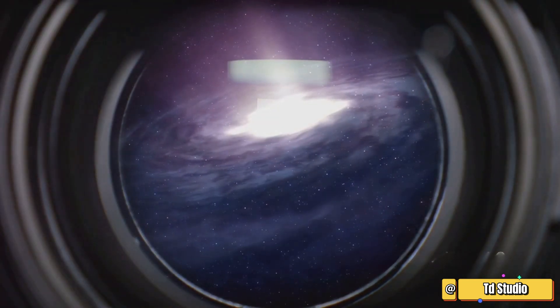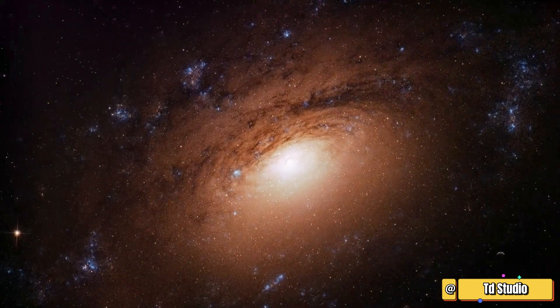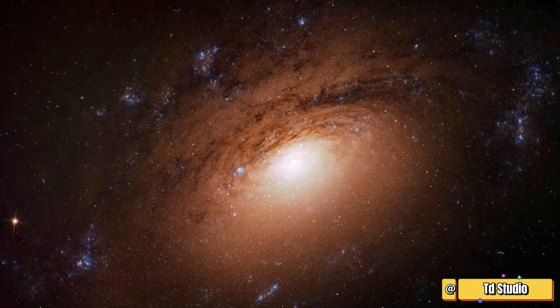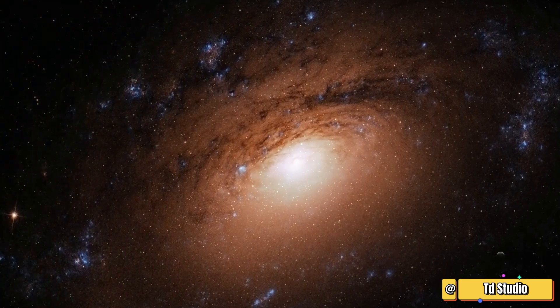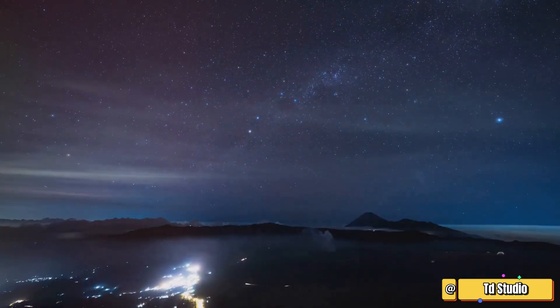Andromeda is about 2.5 million light years away. This means that the light we see from Andromeda today actually left the galaxy 2.5 million years ago. It's like looking back in time, seeing Andromeda as it was long before humans even existed. That's a very, very long distance.